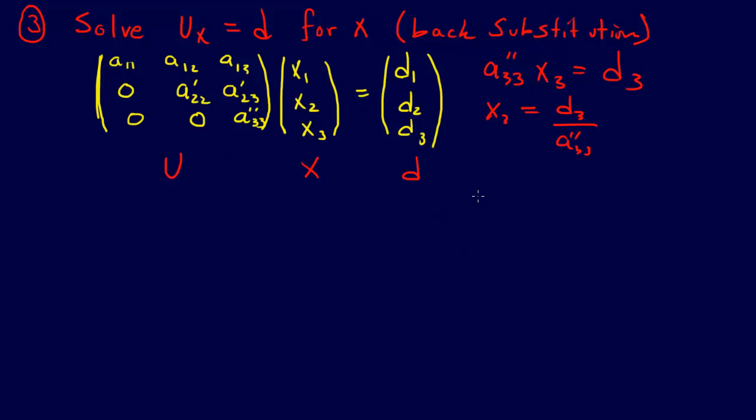Right, and then we can do the same thing for x2. We have the equation a22 prime x2 plus a23 prime x3 equals d2, and we just solve that. So we have x2 equals d2, and that just stays there because we've got to move all this to the other side, minus a23 prime x3, and then we'll go ahead and just divide everything by a22 prime, and that gives us x2.